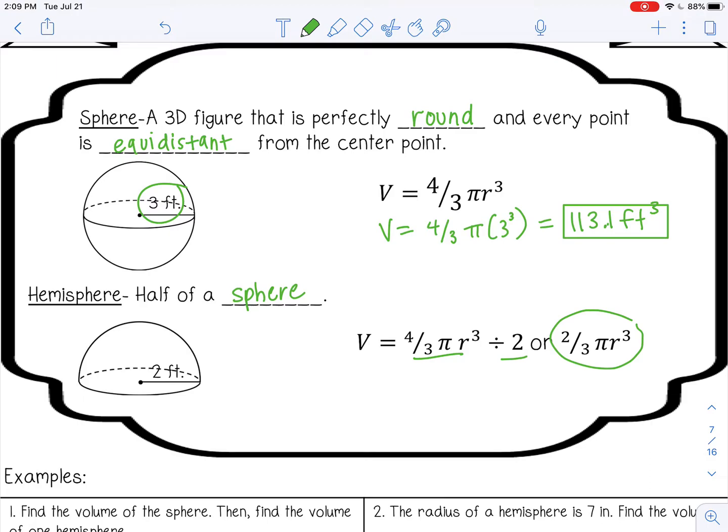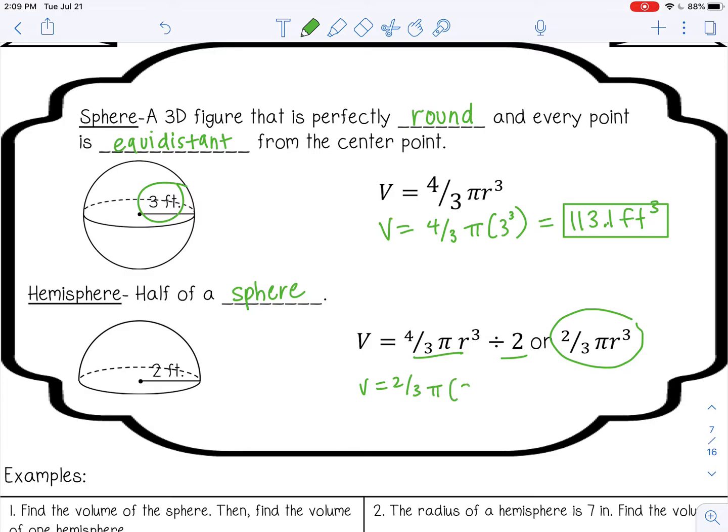So I'm just going to use the second one, so two thirds pi two cubed, because my radius is two. And I got about 16.8 feet cubed.